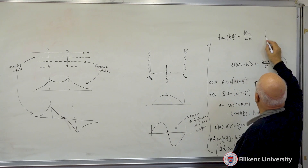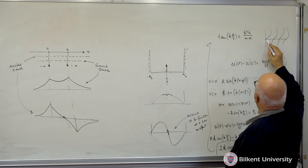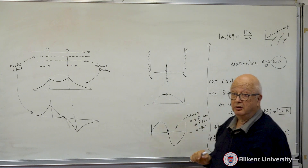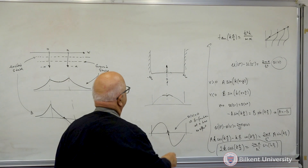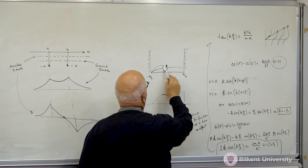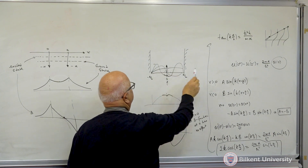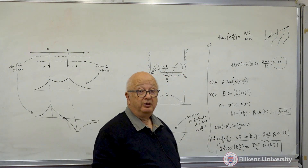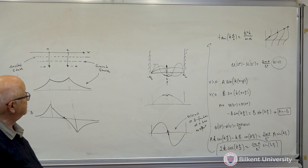You get a family of solutions from intersections of tan(ka/2) with ħ²k/(m·alpha). Adding a small delta function doesn't change everything — you still get an infinite number of solutions (like the original box), but the energy levels are shifted slightly, and only the states with even symmetry (finite at center) are affected.